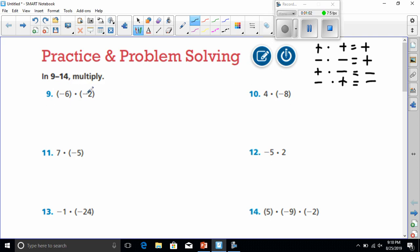Here we have two negative numbers being multiplied together. So as the rules state, negative times a negative will be a positive. And 6 times 2 is 12, so the answer is 12.